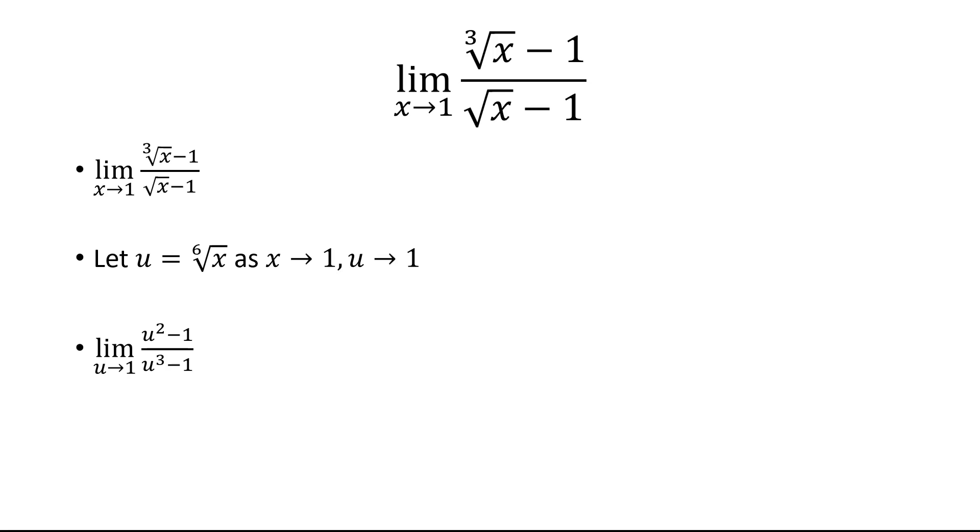Now from here, I can easily factor this. The u squared minus 1 is just u minus 1 times u plus 1. And then u cubed minus 1 is u minus 1 times u squared plus u plus 1. The u minus 1s will cancel. And now I can just plug in 1 and get 2/3 as my answer.